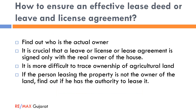To ensure an effective lease deed or leave and license agreement, first find out who is the actual owner. It is crucial that the agreement is signed only with the real owner. Demand to see papers establishing the name and identity of the owner, and request examination of the title deeds, which mention how land was originally allotted and how ownership transferred. This should be done before paying the security deposit or making any advance payment.